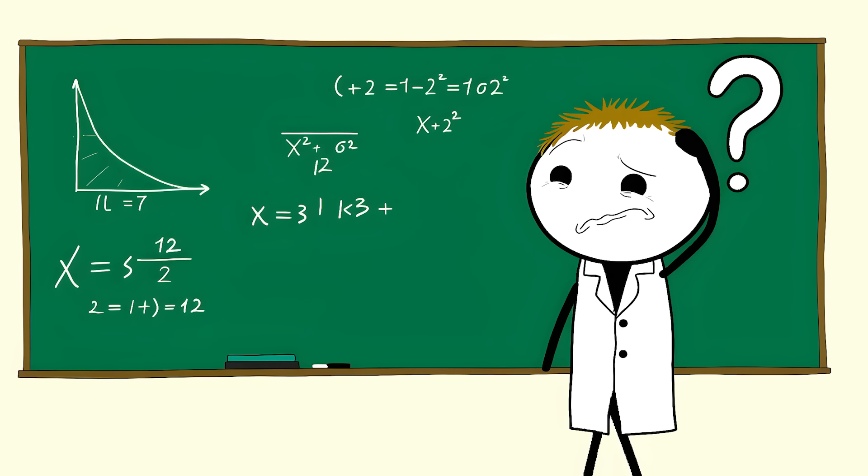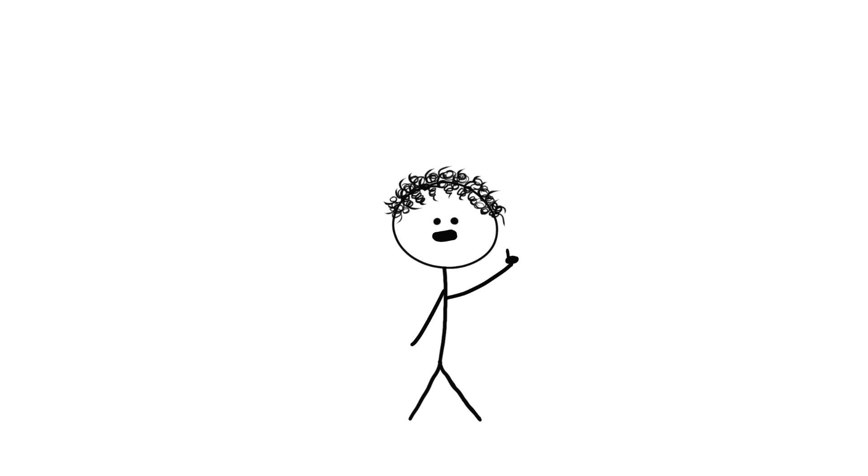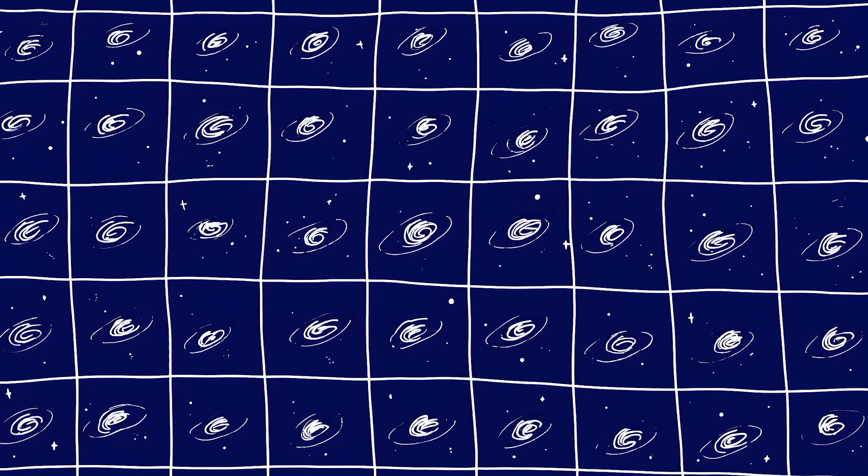According to our understanding of the universe, structures this big shouldn't exist. It's like finding a skyscraper made of Jell-O. The physics just don't work. The universe has this rule called the cosmological principle. Everything should be fairly evenly distributed when you look at really big scales. But this wall completely violates that principle.